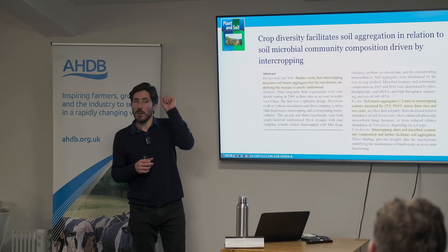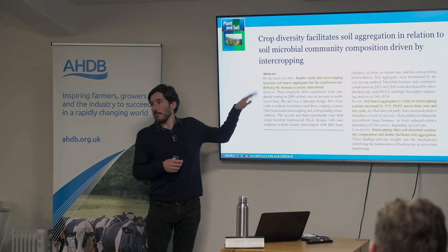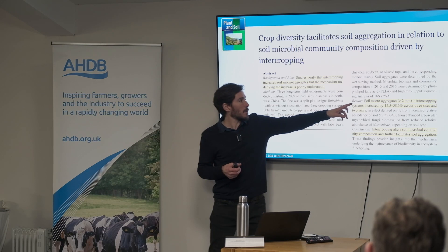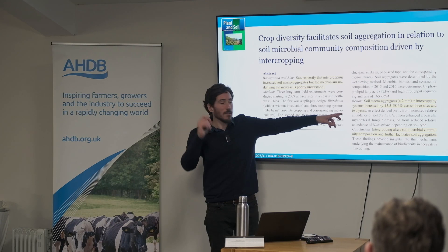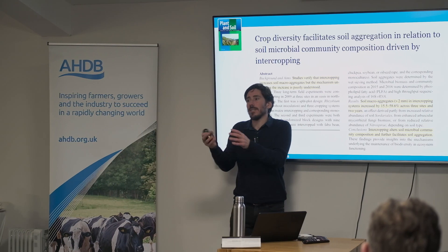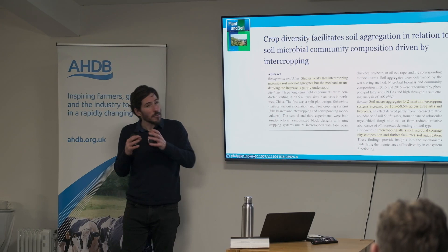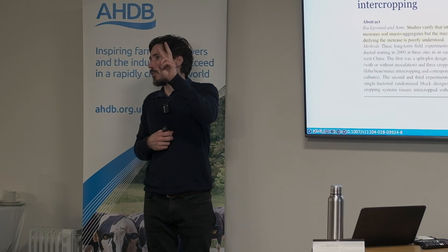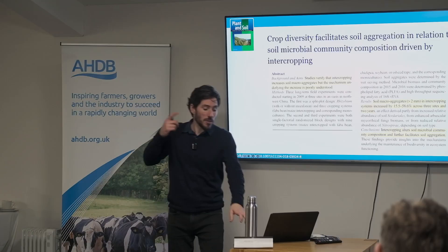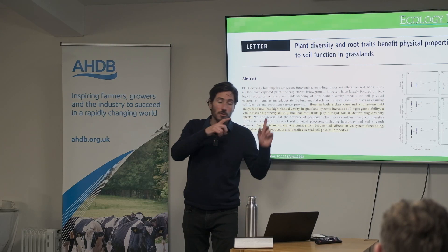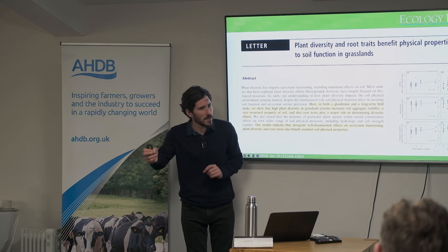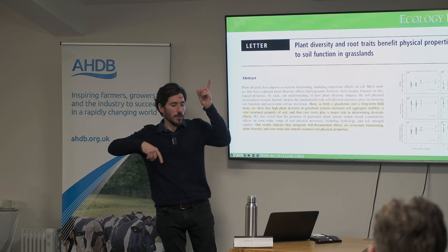Even going from one to two species matters. In a maize and faba bean intercrop study, they found that just two root systems interacting increased macro-aggregate production anywhere from 15 up to 60% compared to a monoculture. Coupled with the strength of those aggregates, this improves soil porosity — letting water drain and allowing gaseous exchange of oxygen and CO₂ — which is relevant to plant stress and therefore pest and disease.